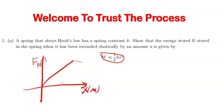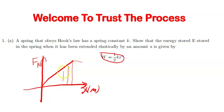For this question, to show that the energy stored in the spring is given by this formula, we are only considering a spring that obeys Hooke's Law. Meaning we are only considering the elastic region — up to and including the elastic limit — not the plastic region, because in the plastic region the spring is deformed.